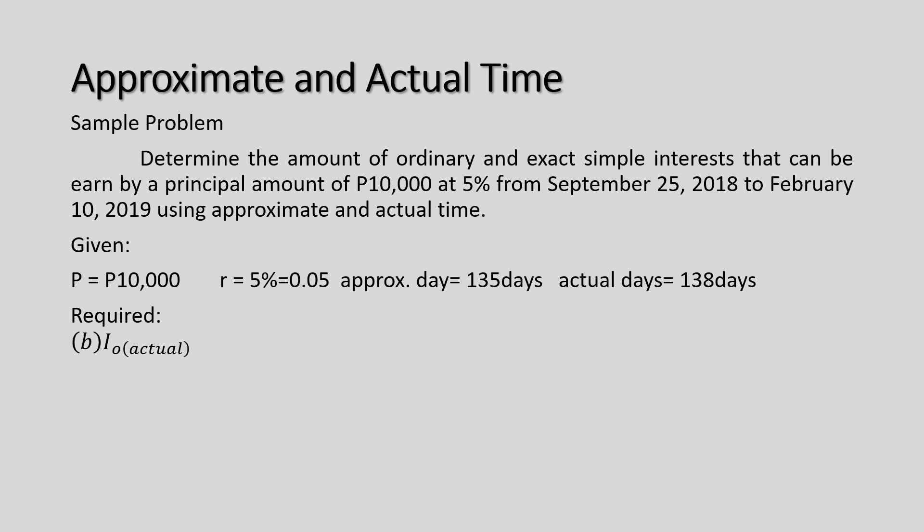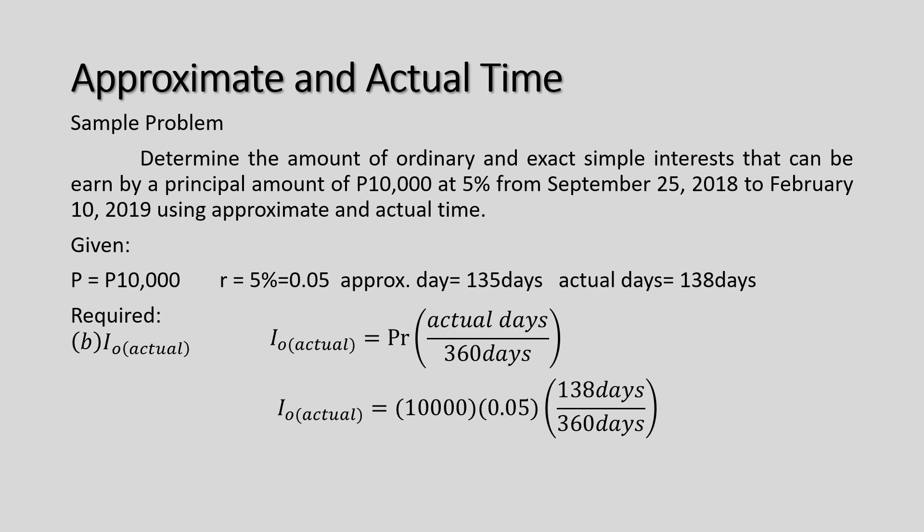For letter B — ordinary simple interest using actual time — we change the numerator to the actual number of days. The formula is P times R times actual days divided by 360. Substituting: P10,000 times 0.05 times 138 days divided by 360 days gives P191.67.